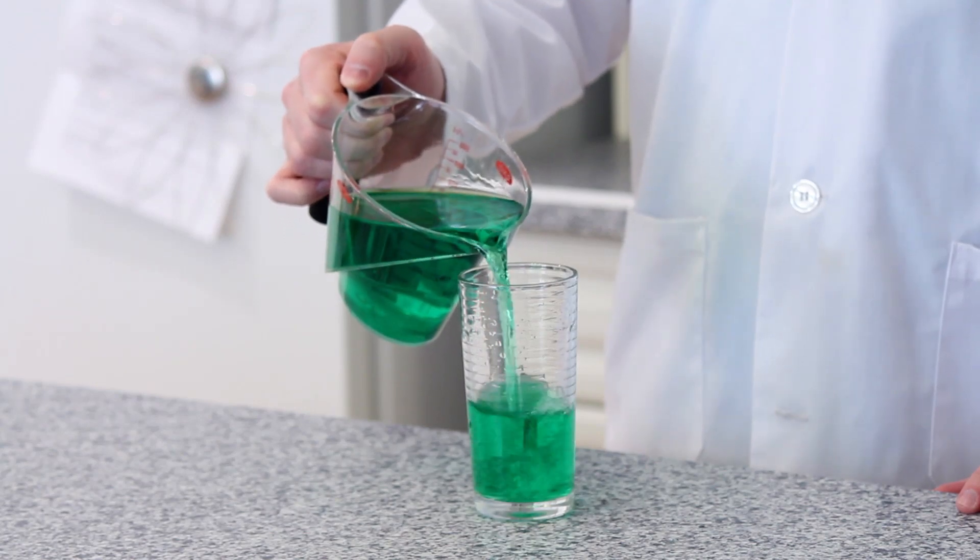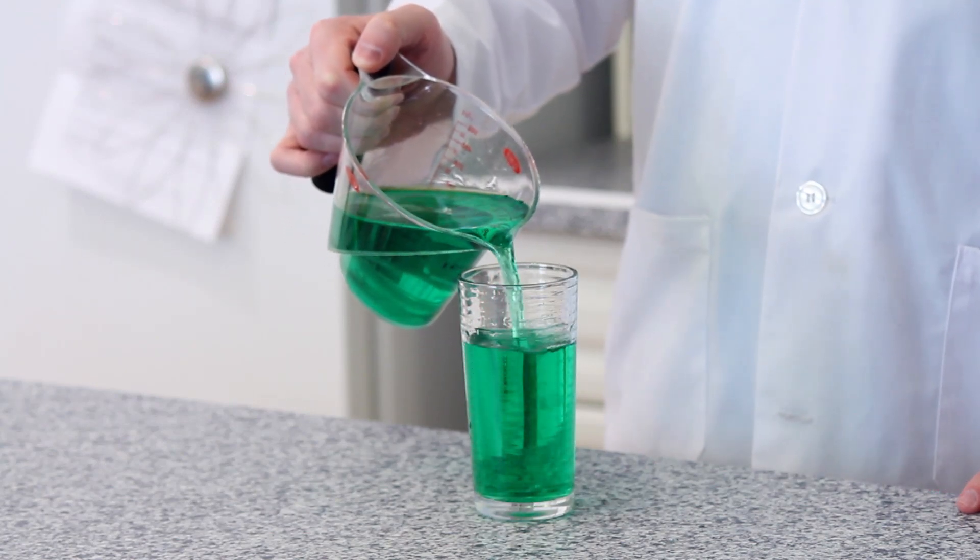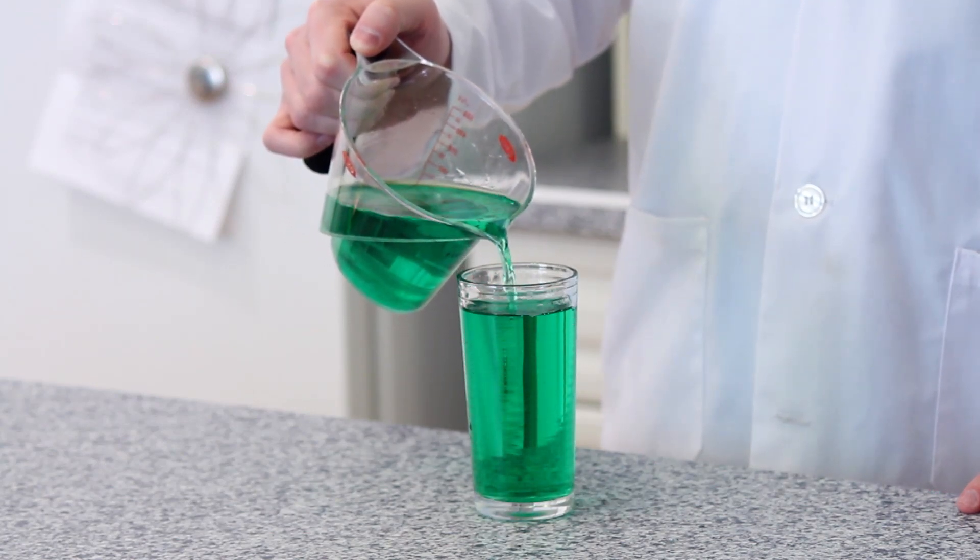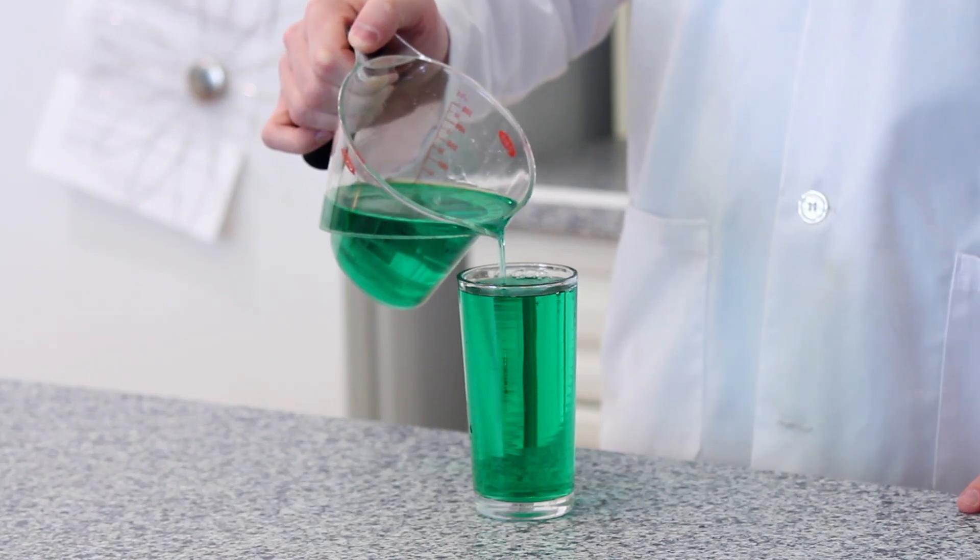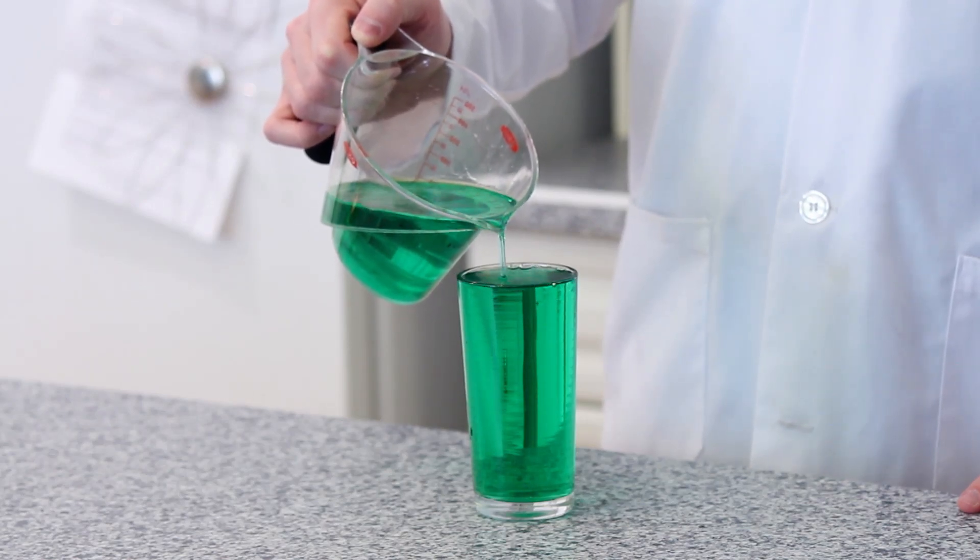The first step in your experiment is to take your glass and a measuring cup full of colored water and fill up your glass until the water reaches the absolute top brim of the glass. It should look like a slight dome of water.